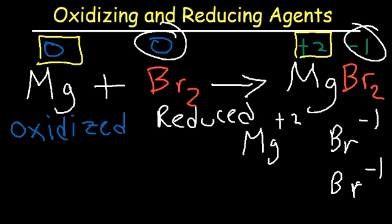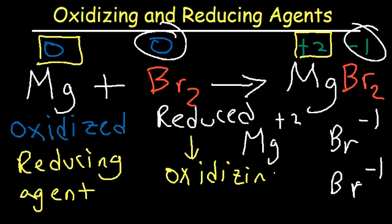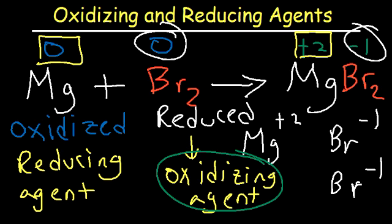The substance that is oxidized is also known as the reducing agent, and the substance that is reduced is also known as the oxidizing agent. The reducing agent is the substance that causes the other element to be reduced. So magnesium is the reducing agent because it causes bromine to be reduced. Bromine is the oxidizing agent because it causes magnesium to be oxidized. Make sure you reverse it — as long as you reverse it, you'll get the right answer.